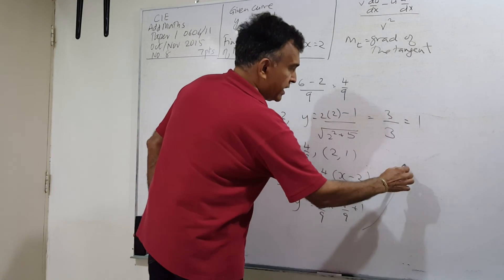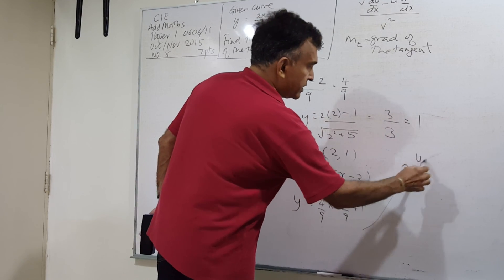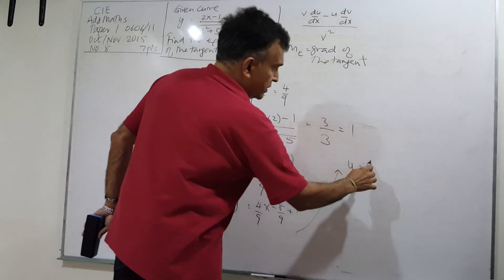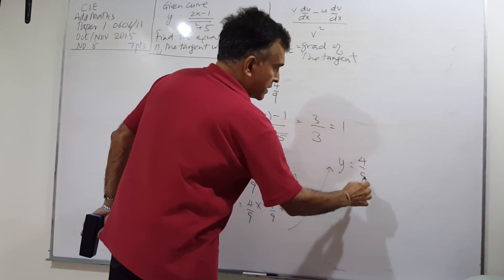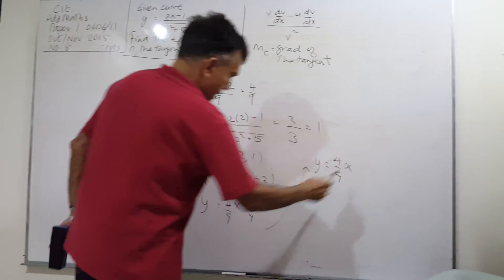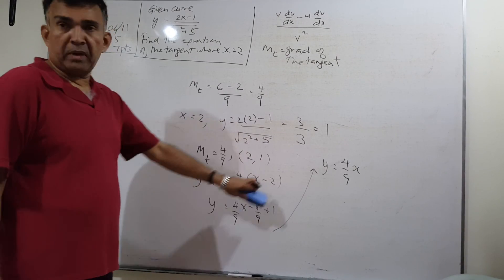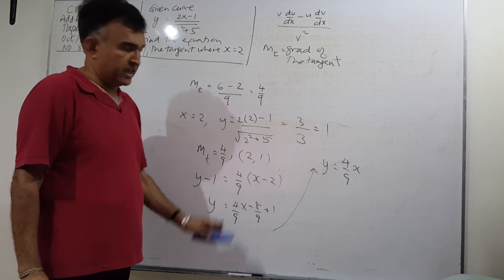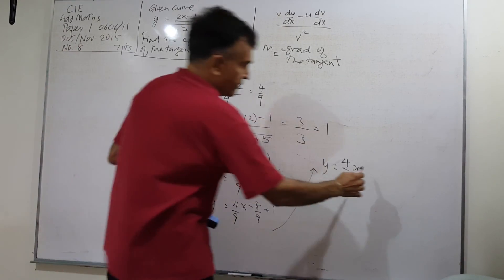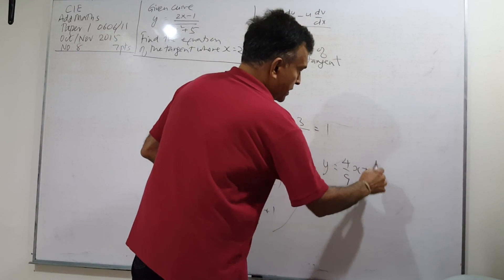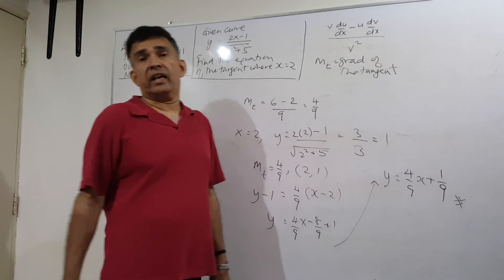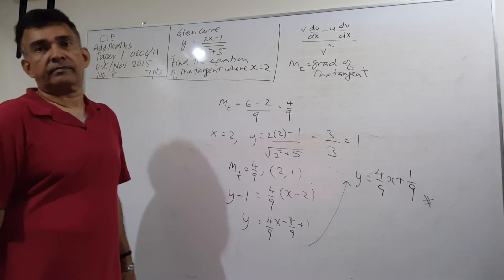So my final answer: y equals (4/9)x minus 8/9 plus 1. Combining the constants: minus 8 plus 9 is 1, over 9, giving 1/9. So the equation of the tangent is y equals (4/9)x plus 1/9. And we are done.